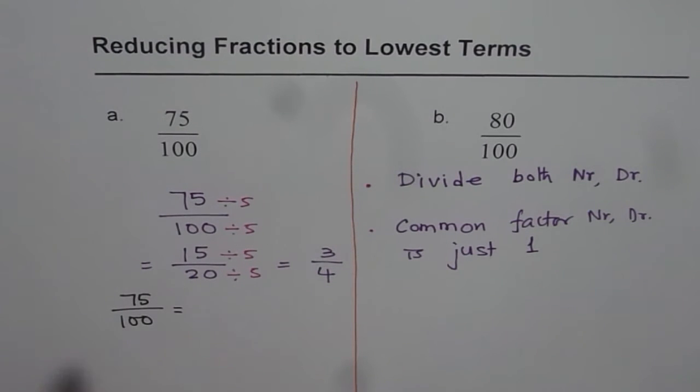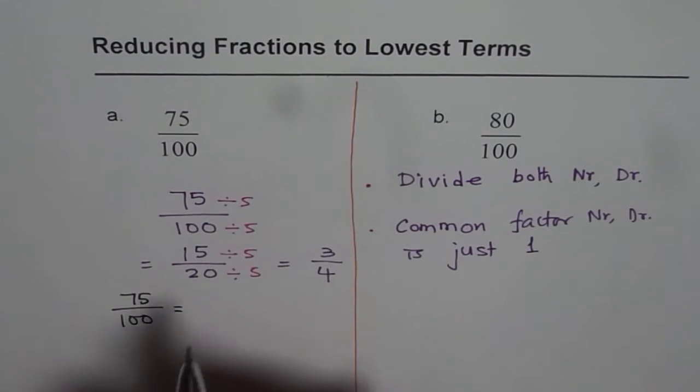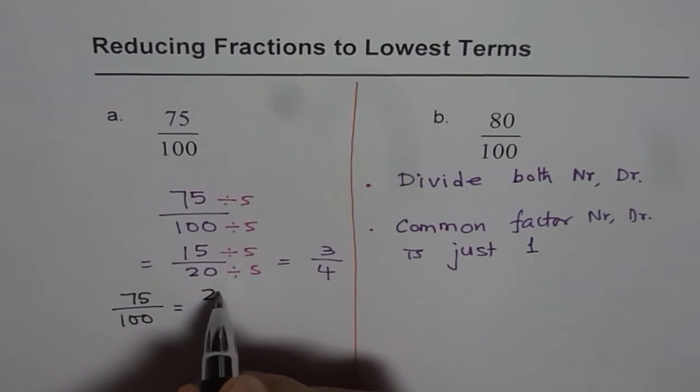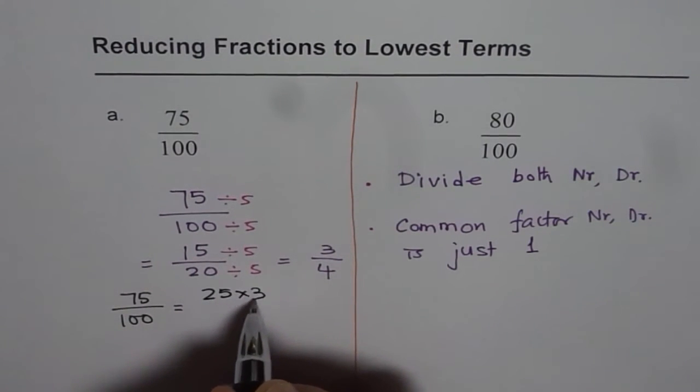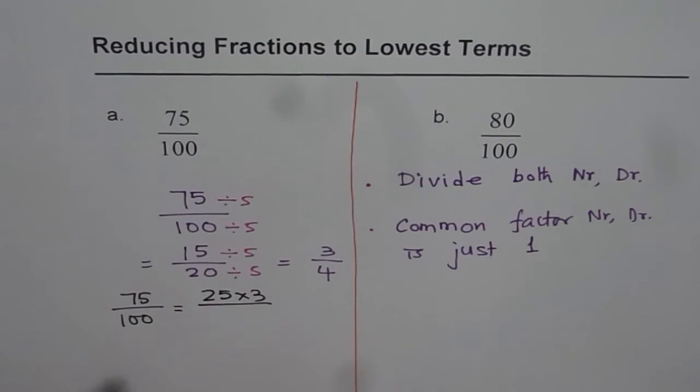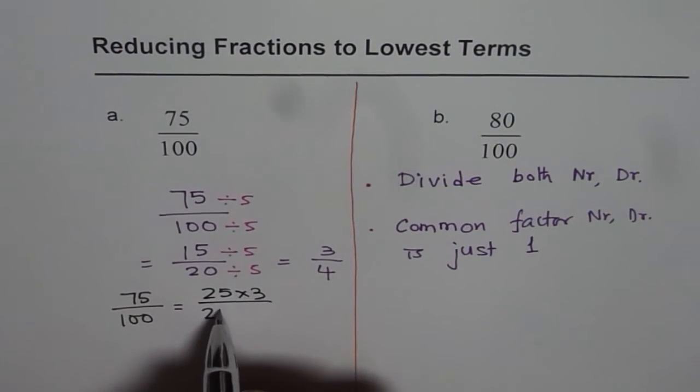I can write 75, you know, quarters. So, there are 3 quarters. We said 25 times 3 is 75. 3 quarters to make 75 and 4 quarters to make 100.